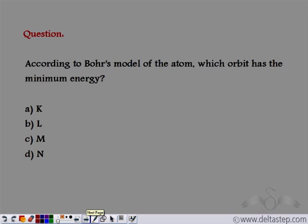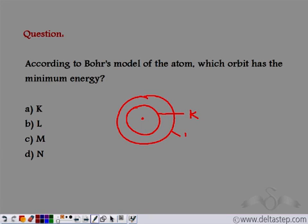According to Bohr's model of atoms, which orbit has the minimum energy? Bohr had marked his orbits as if this is the nucleus. So the first orbit he had named as the K shell, the second was L, and he related the size of the orbit to their energy. So the smallest orbit which is closest to the nucleus has minimum energy. So the orbit which has minimum energy is the K orbit or the K shell.